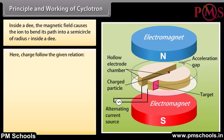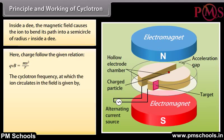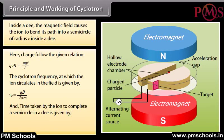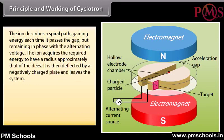The charge follows the relation QVB = MV²/R. The cyclotron frequency at which ions circulate is f = QB / 2πM, and the time taken to complete a semicircle in a dee is t = πM / QB. At resonance, the ion arrives between the dees exactly in time to be repeatedly accelerated and gains energy. This energy gain does not affect the resonance condition except increasing the orbit size. The ion describes a spiral path, gaining energy each time it passes the gap.